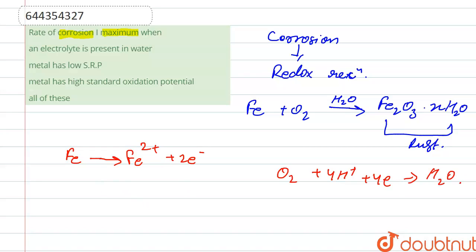So we see that, first, coming toward our options: first is an electrolyte is present in water. So it increases the rate of corrosion because the movement of ions takes place due to the presence of electrolyte.